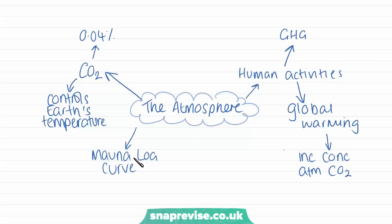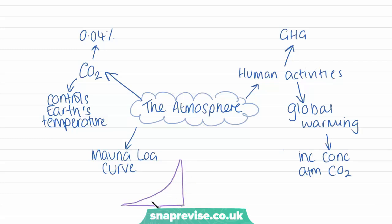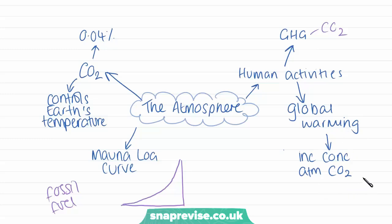Over the last 50 years or so, the atmospheric concentration of carbon dioxide has been increasing — this is driving the greenhouse effect. This has been measured on the Mauna Loa curve, a graph produced at an observatory in Hawaii that has been measuring CO2 concentration over the last half century. The graph shows a clear increasing trend in CO2 over time. This has been happening since the Industrial Revolution, driven by increased use of fossil fuels and urbanisation. Human activities releasing greenhouse gases such as CO2 are causing global warming.